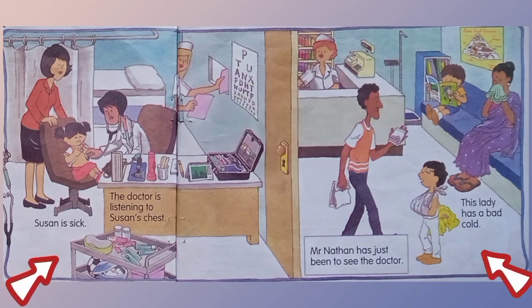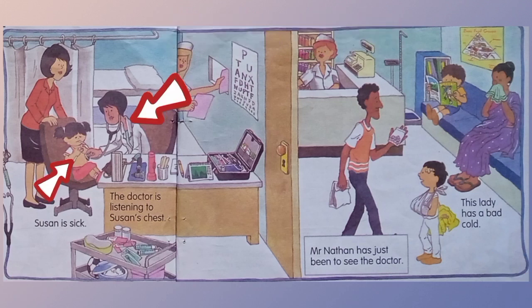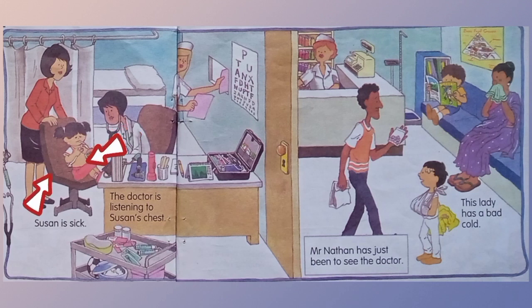This is the picture of a doctor's clinic. The doctor is listening to her chest. How is the doctor listening to her chest? The doctor is listening to her chest with the help of a stethoscope. She is sitting on the chair and she holds the thermometer in her mouth. Why does she hold the thermometer? To check the body's temperature.